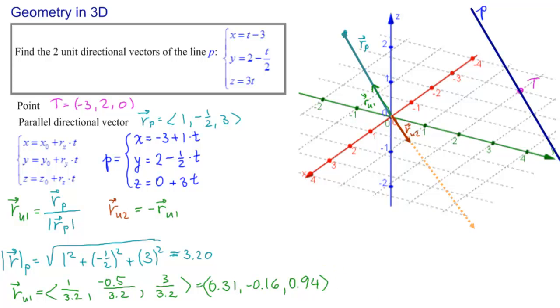And, as we said, R U 2 is simply minus 0.31 plus 0.16 and minus 0.94. And these are the answers to the problem.